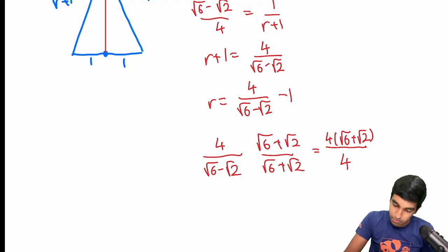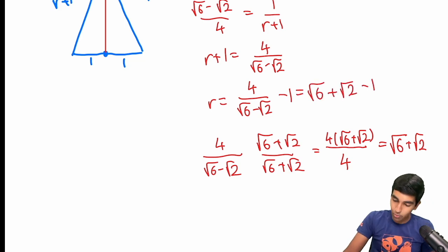And then, of course, that's just this part over here. And this simplifies to root 6 plus root 2. So then this is equal to root 6 plus root 2 minus 1.